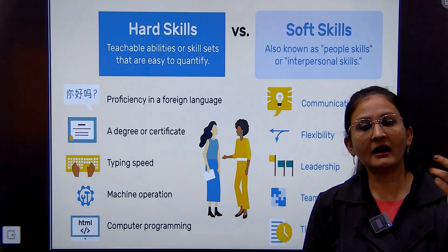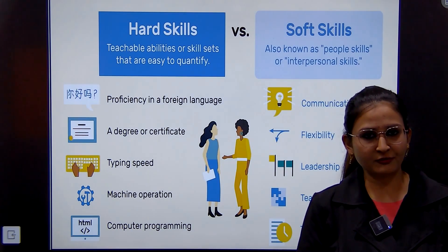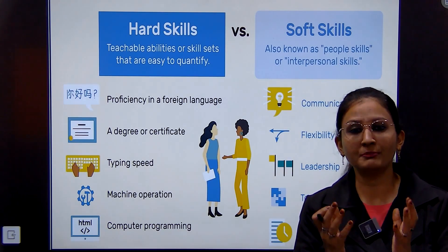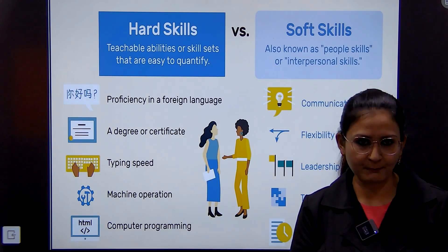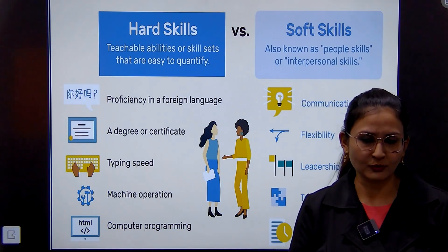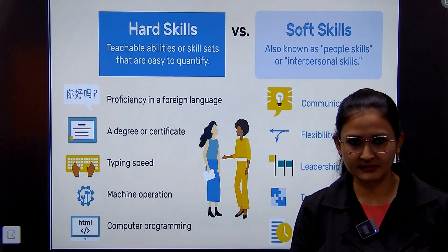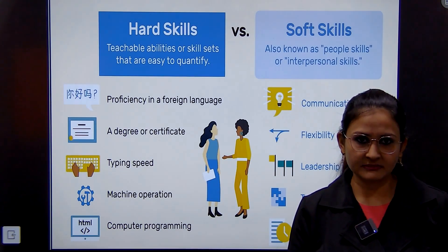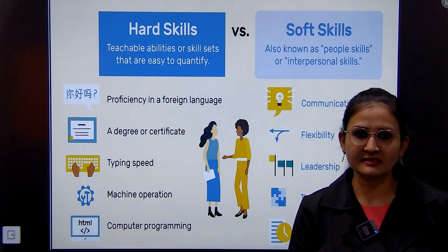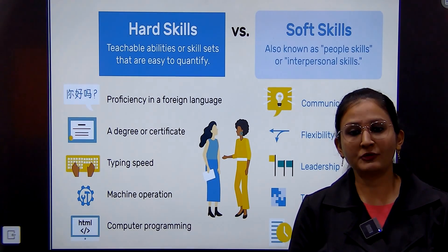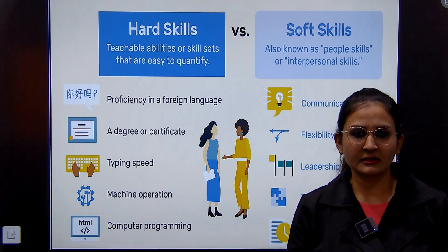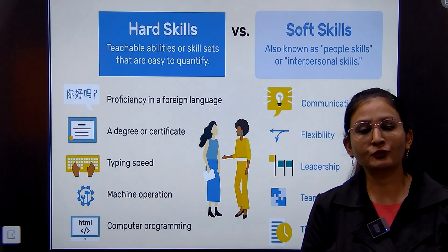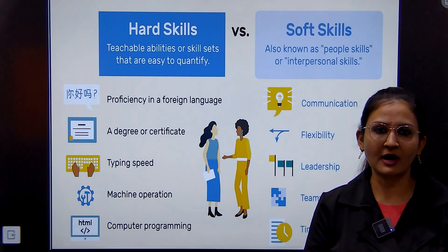If you have a very good typing speed, then it's your hard skill. Machine operation — if you are good at operating any machine, that is your hard skill. Computer programming is also a hard skill.